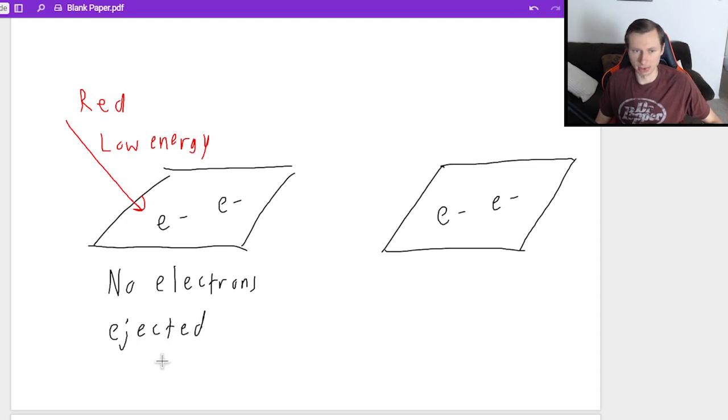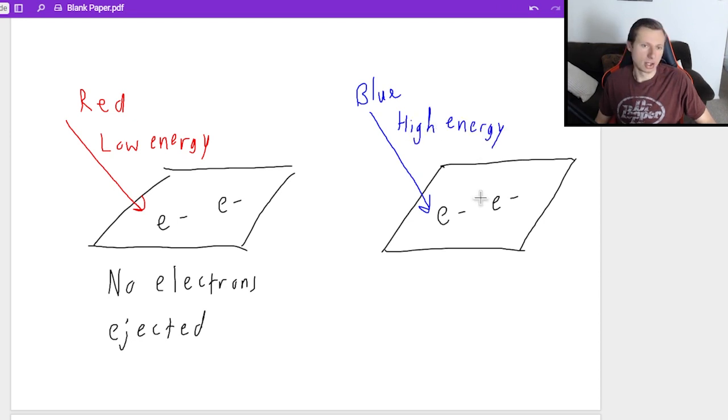Ejected meaning they fly off of the metal. But then when you take the exact same plate of metal and you shine blue light on it, and blue light is known for having much higher energy than red light, then now all of a sudden the electrons start flying out. And they do get ejected.